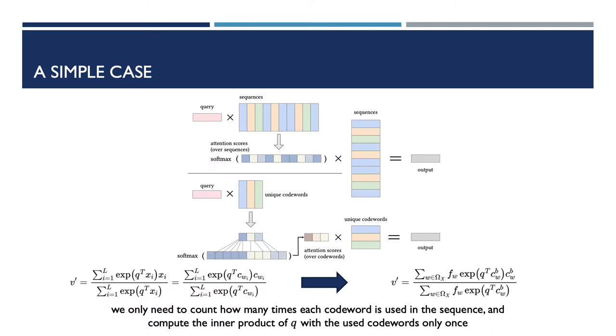Let's first look at a simple case where a single code book is used to encode items. In this case, an item is directly represented by the code word with a maximum relevant score to it. Here, for the sake of simplicity, we omit the projection matrix at this moment. The value of self-attention can be computed as the equation on the left. From this equation, we observe that we may have repeatedly computed the inner product of the query Q with the same code word CW, since a number of items in the sequences may all share the same code word as their representations.